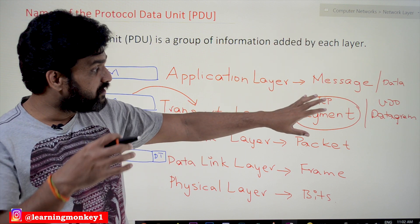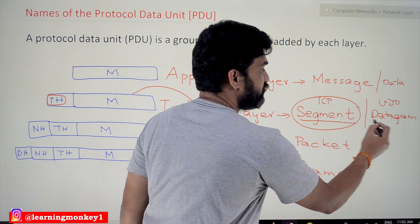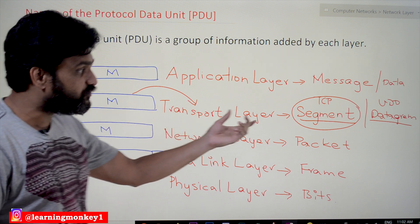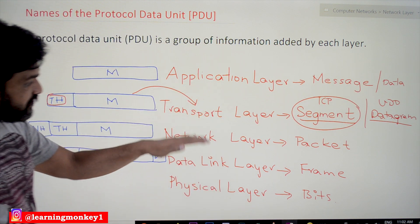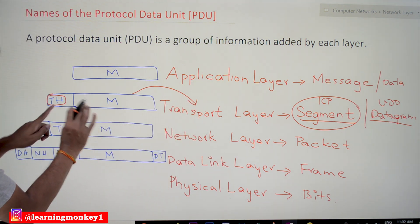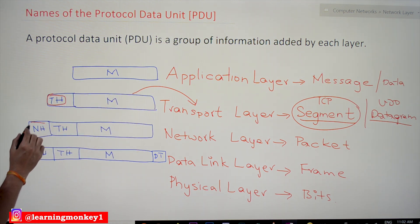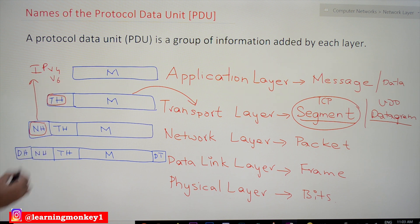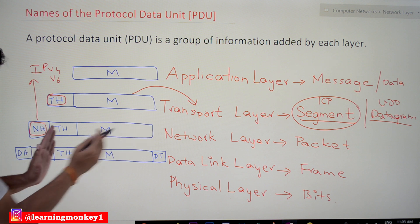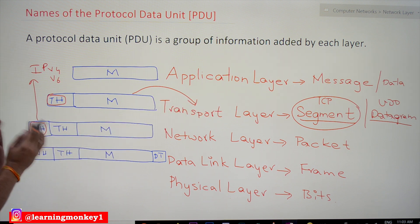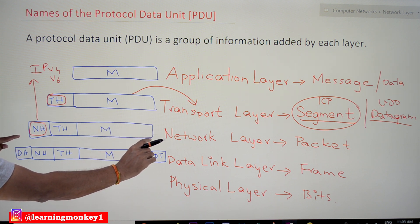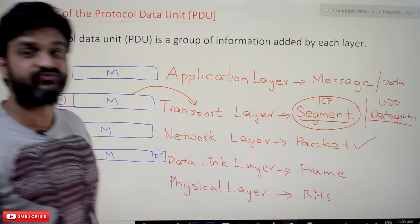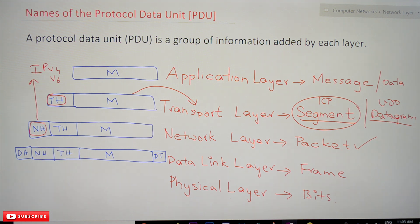We are going to discuss TCP and UDP in detail in the transport layer topic later. At this point we will consider only 'segment' as the PDU name for the transport layer. Moving to the layer below — the network layer — the network header (which is IP, either version 4 or version 6) gets added to the payload. The resulting PDU in the network layer is what we call a packet.